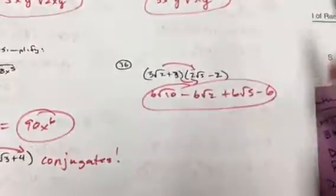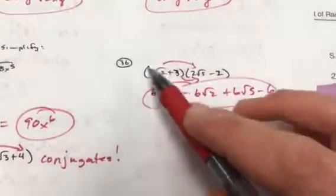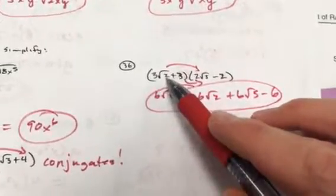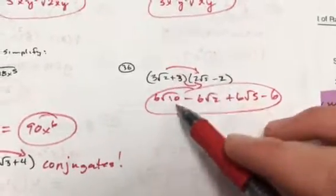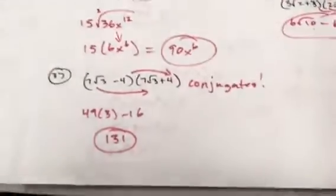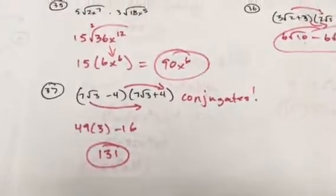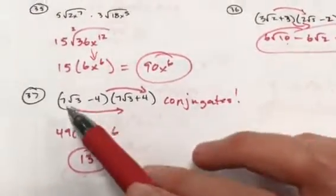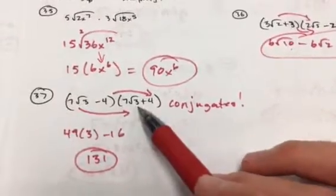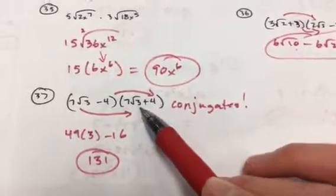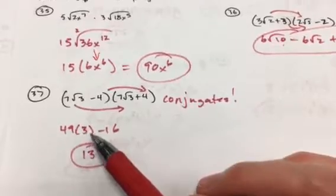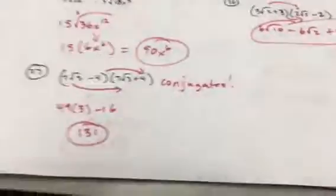Number 36: FOIL it out — 2√3 times 2 gives 6, and within the root 2 times 5 is 10, so you get root 10, which doesn't break down. Number 37: you have conjugates, so you only need the first and the last. 7 times 7 is 49; √3 times √3 — when you square a square root, the number just drops down — giving you 3.